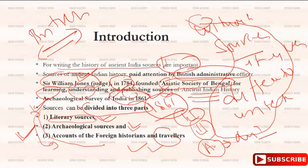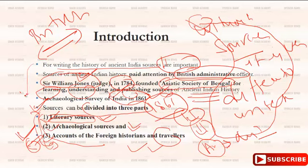All these sources are complementary to each other. If any researcher wants to do research on any topic in ancient India, they first go through literary sources, then archaeological sources, then confirm through foreign accounts, and then decide to write the history. This topic is important for exams as well as for research purposes.